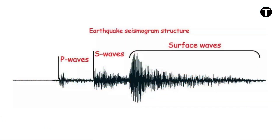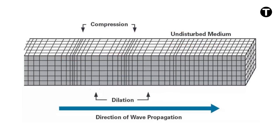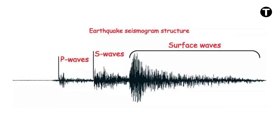When an earthquake strikes, two main categories of waves are generated: body waves and surface waves. Body waves include P-waves, which move by successive expansion and compression parallel to the direction of wave propagation. P-waves are the fastest, at 6 km per second near the surface. They are the waves recorded first on a seismogram and can travel in any type of material, including fluids.